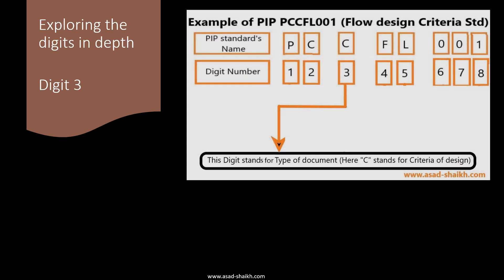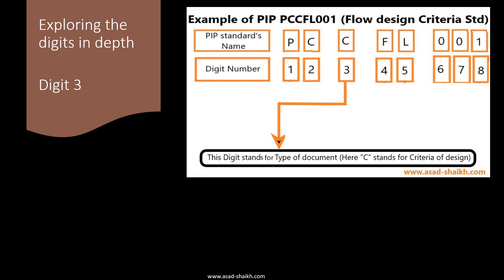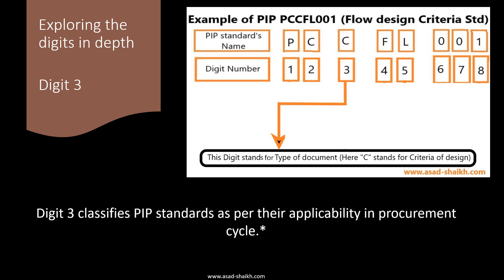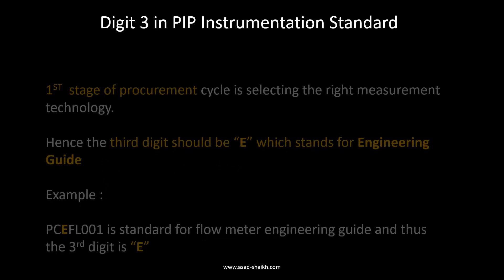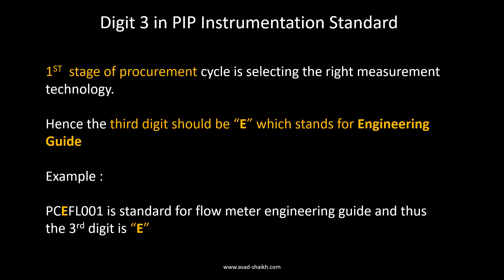The third digit stands for the type of document that the standard caters to, classifying PIP standards as per the procurement cycle. The first stage of the procurement cycle is selecting the right technology, so the third digit E stands for engineering guide. Any PIP standard with the third digit E is an engineering guide — for example, PCEFL001 stands for flow meter engineering guide.